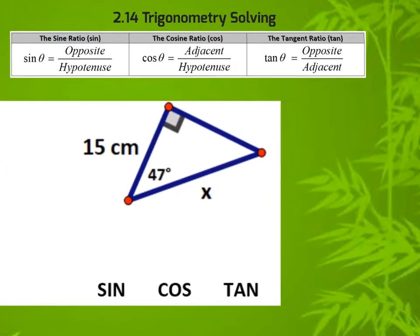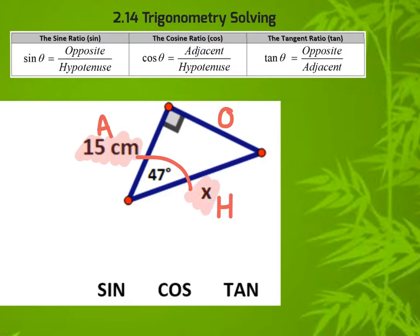In this next case, let's start by correctly labeling. We mark our arc here — this is our h, this is our a, this is our o. In this case, we definitely want to use the number 15, we want to find the value for x, and we know the angle. The values being used are the adjacent and the hypotenuse, so that, of course, is cosine.